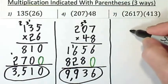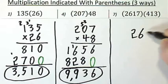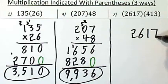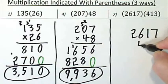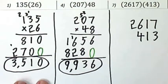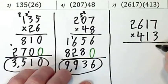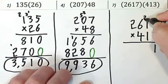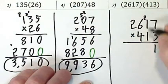And for our last one. Three times seven, twenty-one. Carry that two, three, four, five.